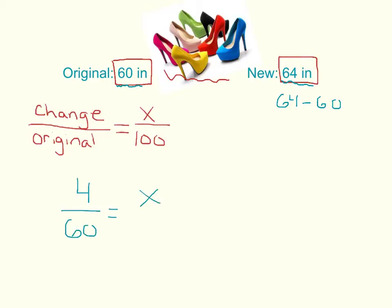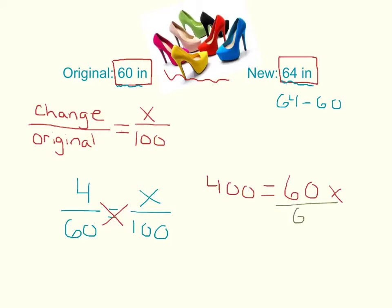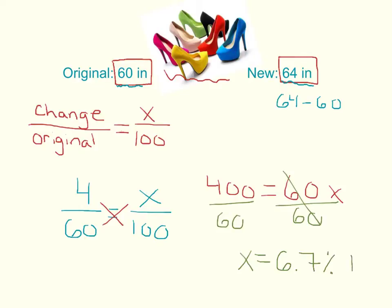So we have 4 over 60 equals x over 100, because we're dealing with a percent. Now we cross multiply to solve: 4 times 100 is 400, equals 60 times x. Divide both sides by 60 to find the percent — his height increased by about 6.7%. You always want to state whether it was an increase or decrease, and in this case it's a 6.7% increase in his height after he put his heels on.